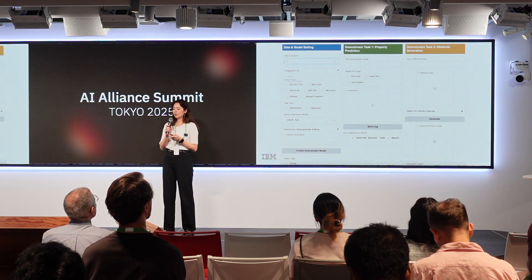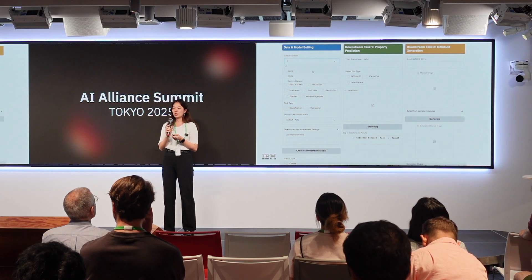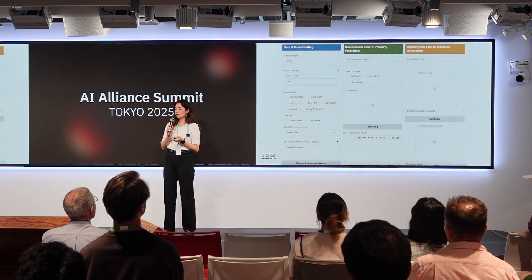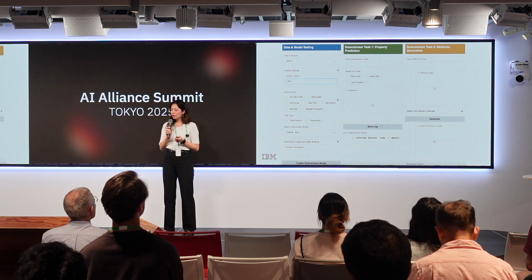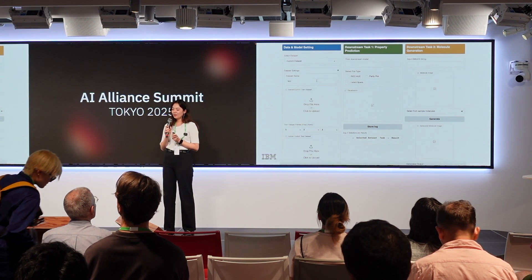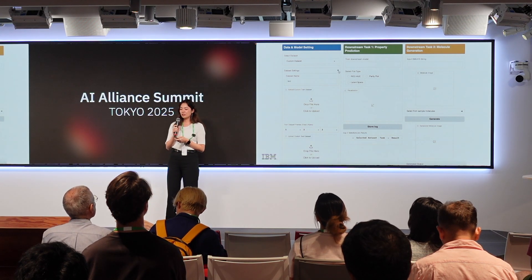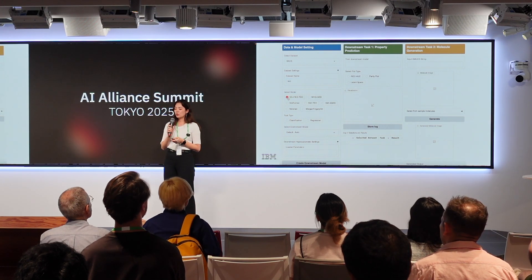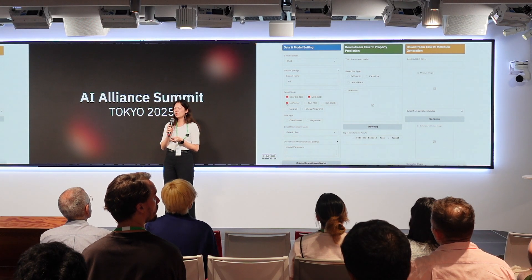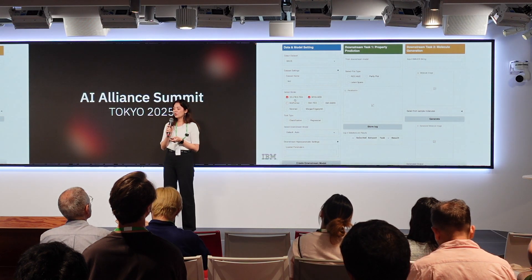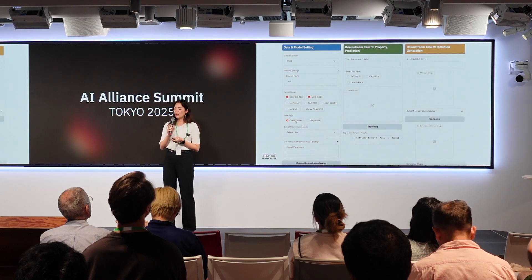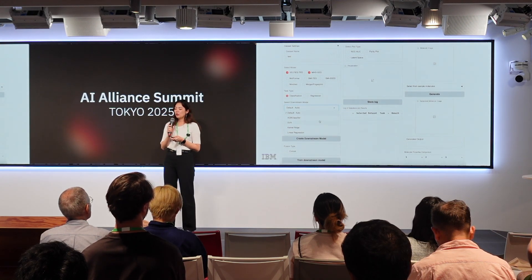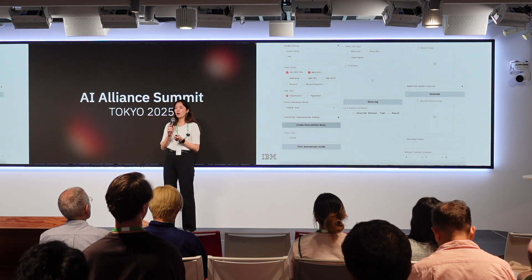You can choose one of the given datasets or upload your own custom dataset — setting the dataset name and dragging and dropping your file. Next, you select the model you want to use: SELFIES-TED, the molecular graph model, MolFormer, SMILES-TED, SMILES-SSED, and so on. In this case we're choosing SELFIES-TED and the molecular graph model. You then choose the task type, define the classifier or regressor, and set hyper-parameter settings.